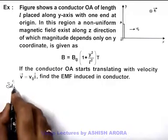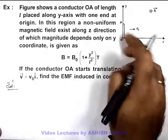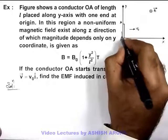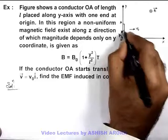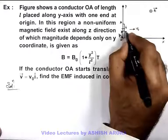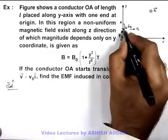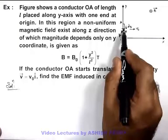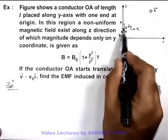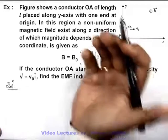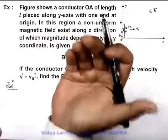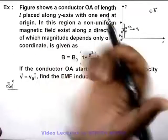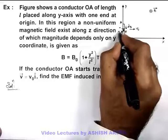In solution, as the field is non-uniform, we need to consider an element in this conductor. We consider an element at height Y with width dY. For this small element of width dY moving with velocity V₀, a motional EMF will be induced. Direction can be obtained by right-hand palm rule: as it is going right and field is upward, positive charges will experience force downward and negative upward, so the upper end will be negative and lower end will be positive.